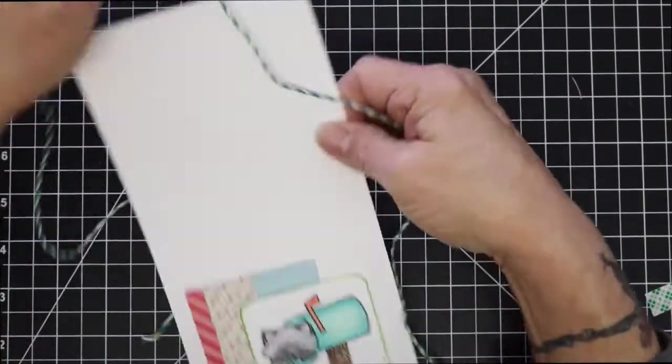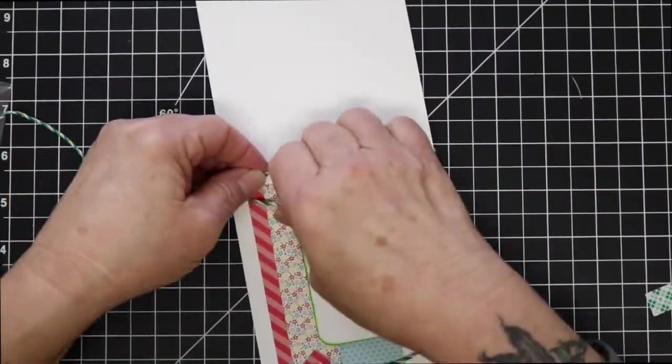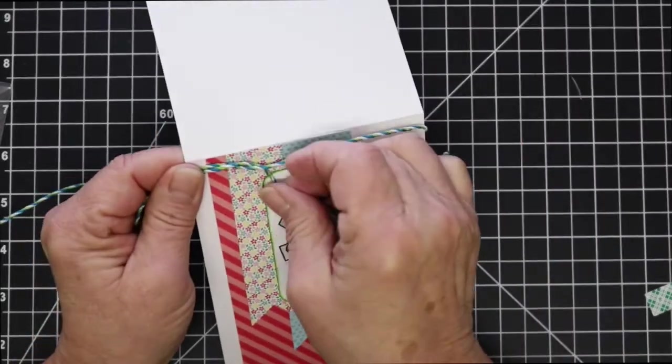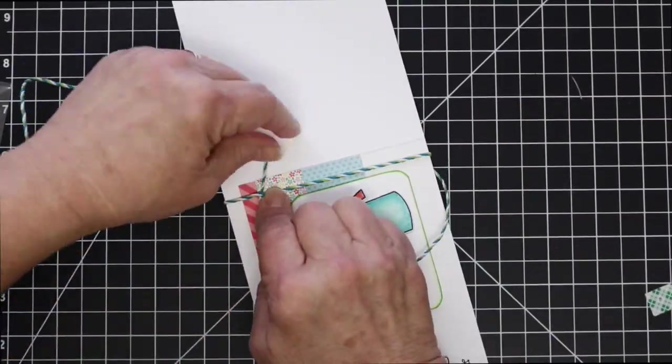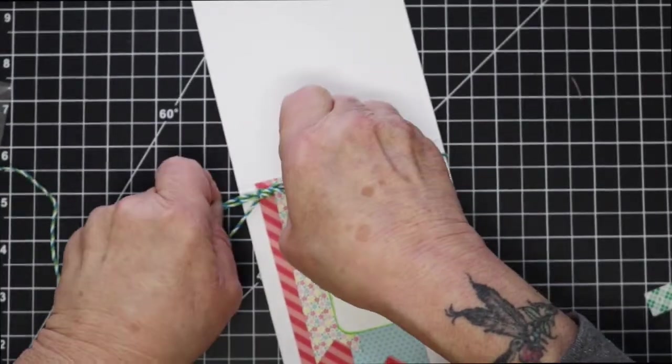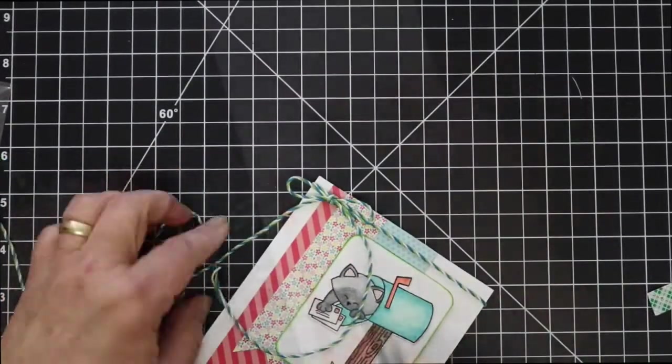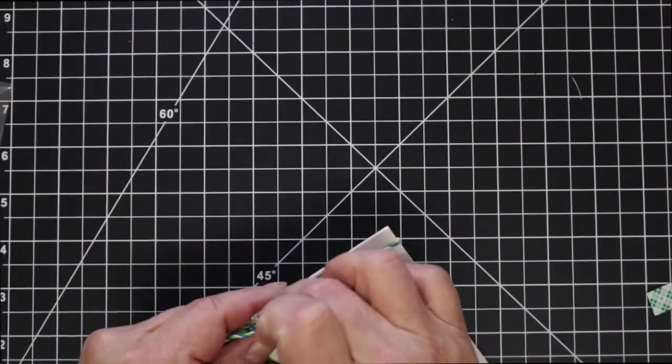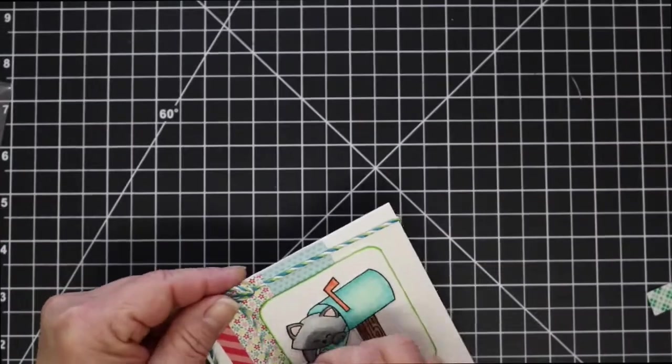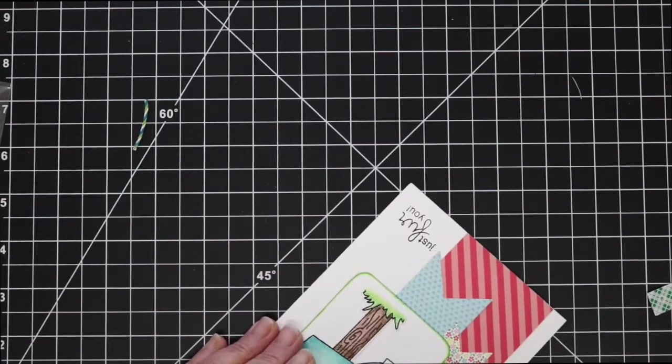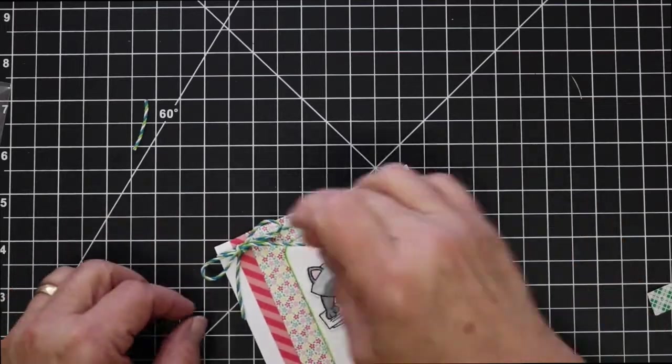I just happen to have some baker's twine from Lawn Fawn laying on my desk. This comes with their packages. When you purchase a stamp from them you usually get this colorful trim. So I'm going to wrap it around the top. I'm going to tie a bow and trim the tails and get it adjusted the way I like it. Maybe trim those just a little bit more and this is going to be it for today.